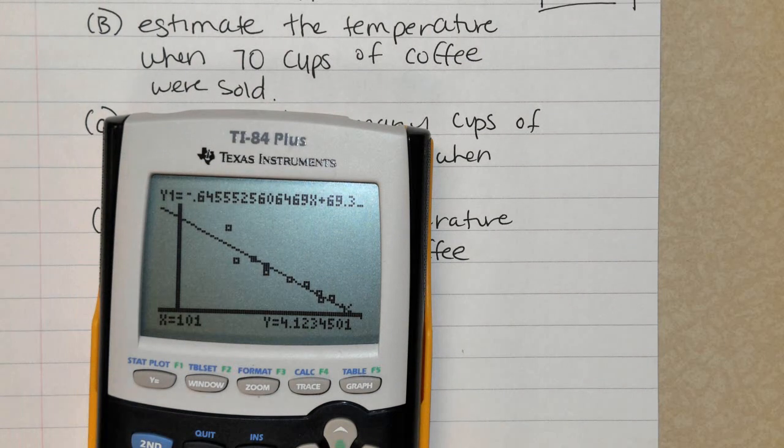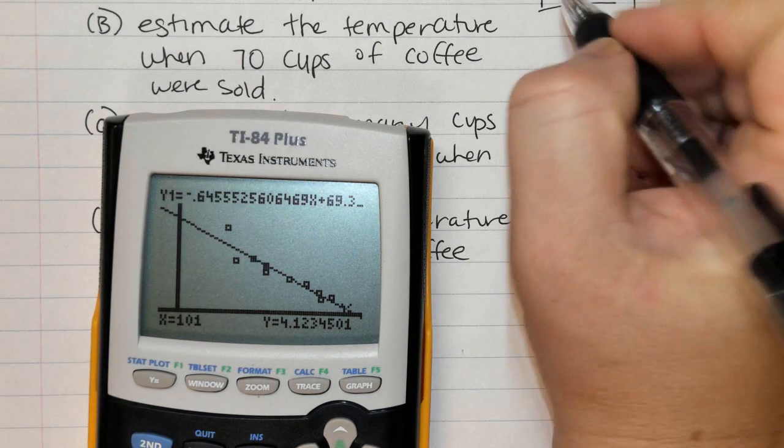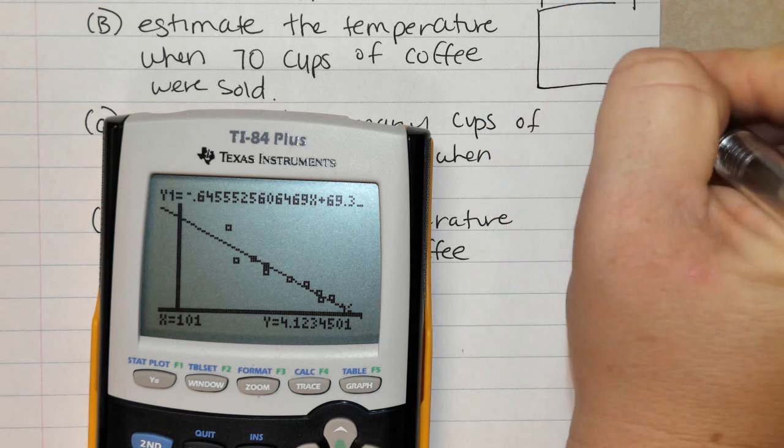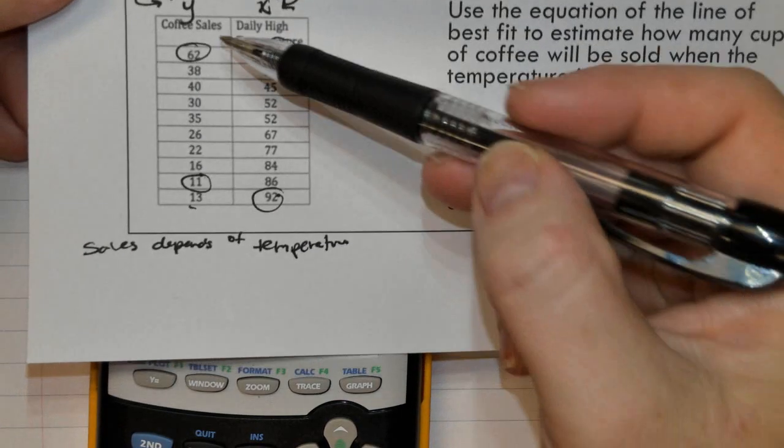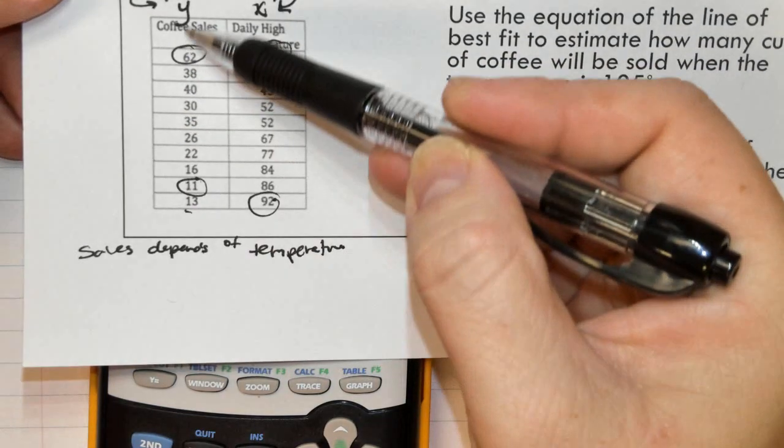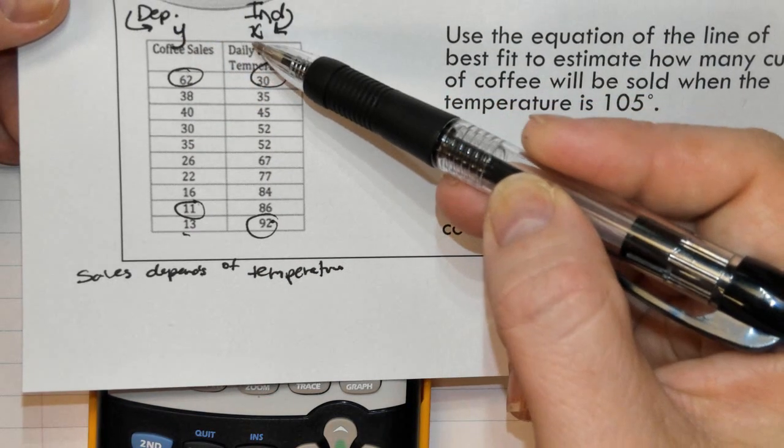Part B. Estimate the temperature when 70 cups of coffee were sold. Okay, so now we're given cups. I come back here. I'm giving cups of coffee or sales of coffee. So I'm given a y and you need to find the x.